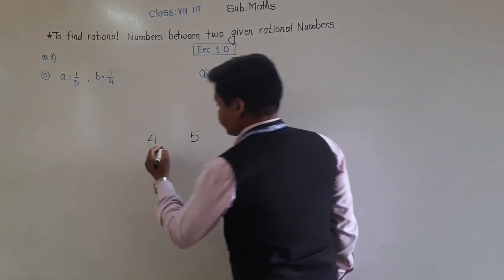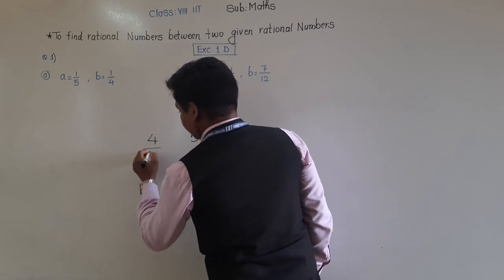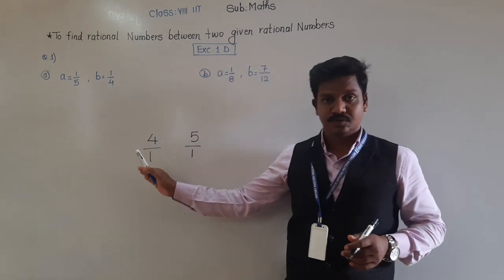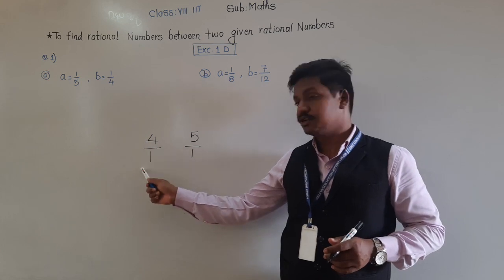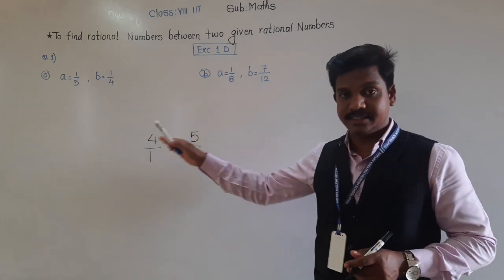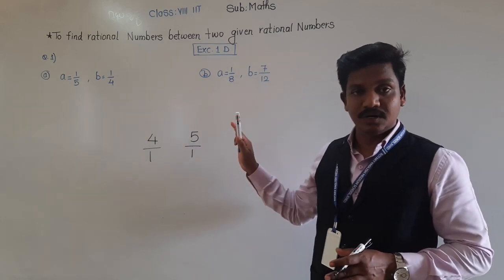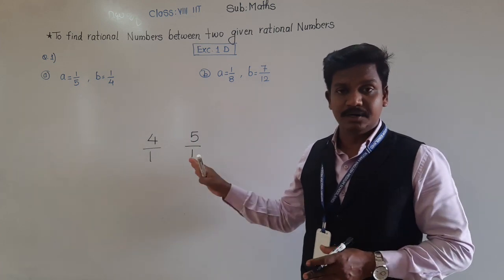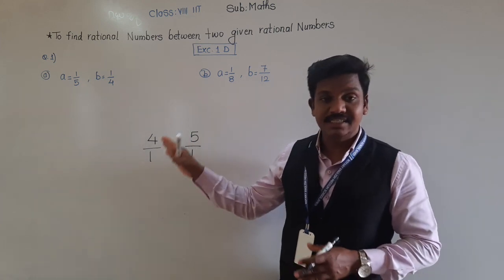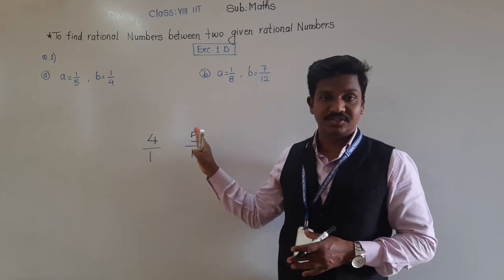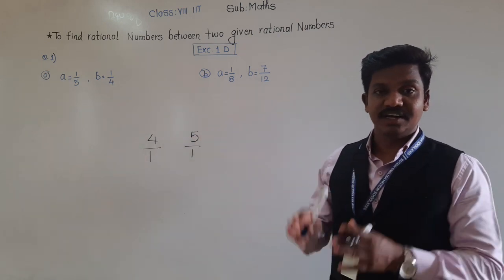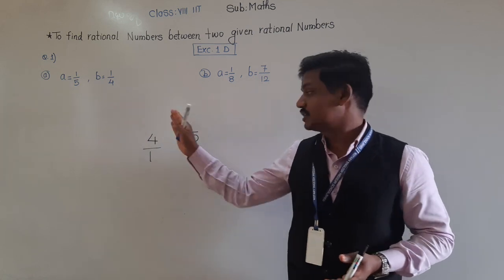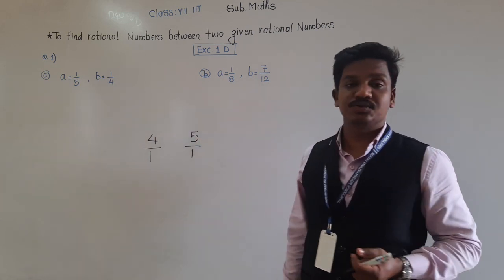But if we convert this into the form of p upon q — that is, if we write the denominator of four and five, which is one — so now these are rational numbers: 4/1 and 5/1. Between these two rational numbers, can we find other numbers between 4/1 and 5/1?